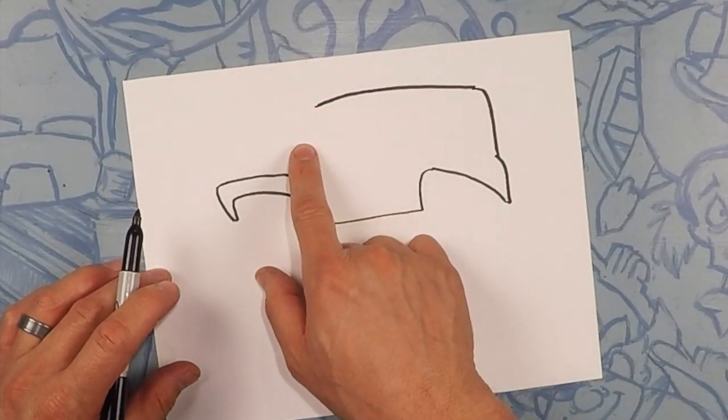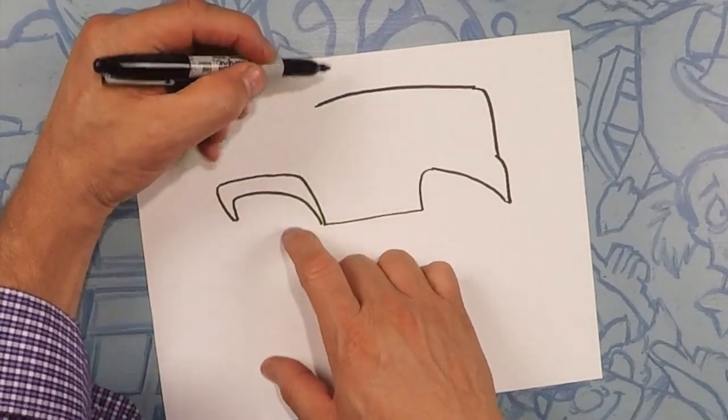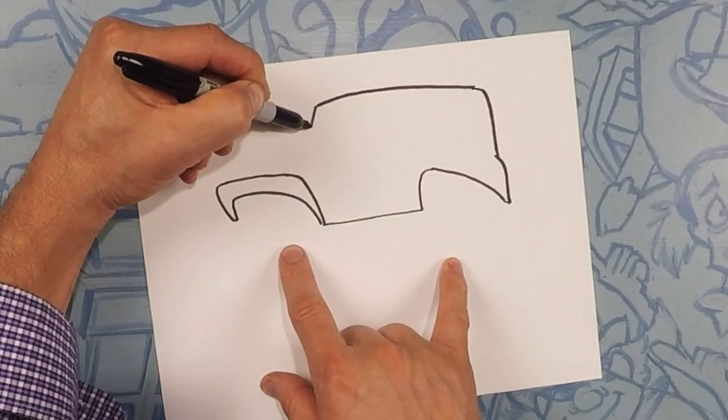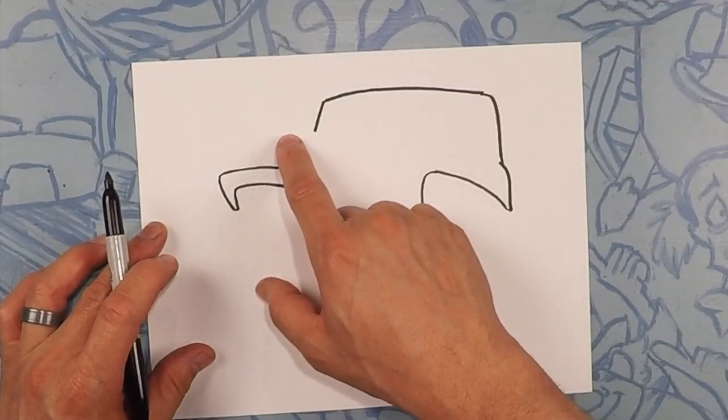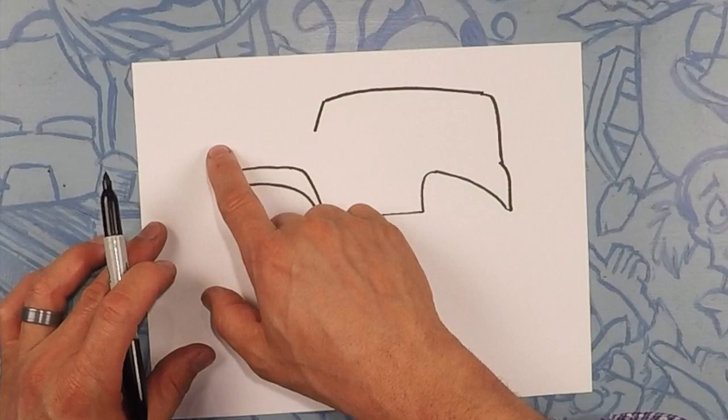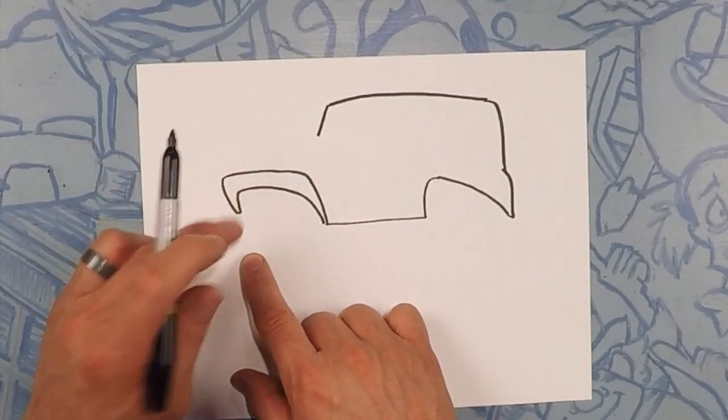So from there we're going to draw the front windshield down to about right here. Awesome. All right from this line we're going to take this down to the hood. It's going to go out and have that same style curve like that.